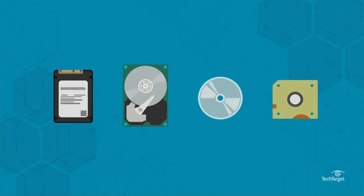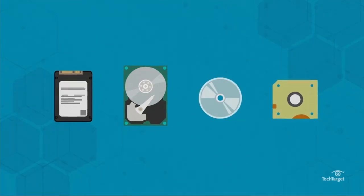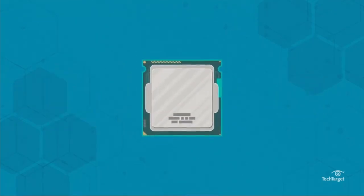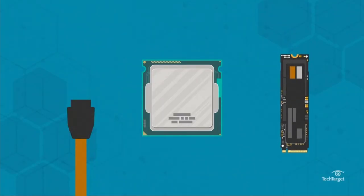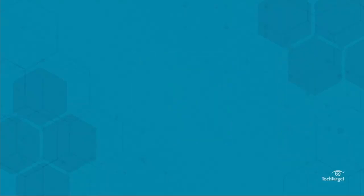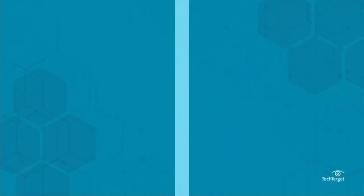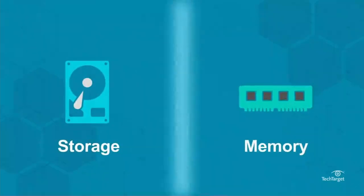Computer storage devices include solid-state and hard disk drives, as well as optical and tape devices. Storage doesn't directly connect to the CPU, but instead runs through an interface — usually either SATA, which has been the standard for years, or NVMe, which reduces latency and delivers higher throughput. There are points where the line between storage and memory blurs.